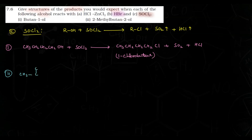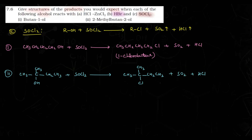Second part: 2-methylbutan-2-ol — structure CH3-C(CH3)(OH)-CH2-CH3 — SOCl2 ke saath reaction. OH ki jagah Cl aayega. Product: CH3-C(CH3)(Cl)-CH2-CH3, saath mein SO2 aur HCl bahar. Is compound ka naam hai 2-chloro-2-methylbutane. Yeh wala question samajh aaya? Done. Chalo ab milte hain next question mein — tab tak ke liye bye-bye.